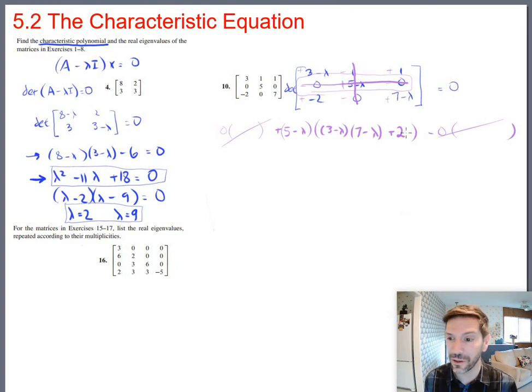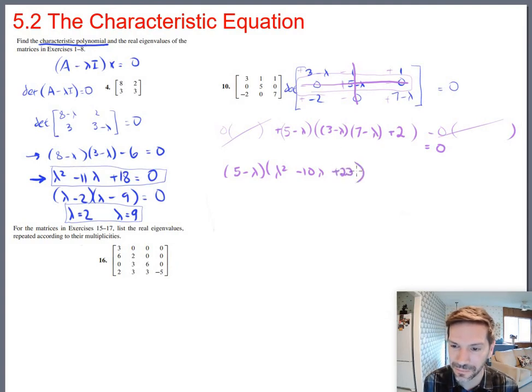That is the characteristic polynomial, although they will want it multiplied out. And because we are all hot shot math nerds in this class, this is fun stuff, right? We actually like multiplying out polynomials. I mean, how often do you get to come back and do this kind of thing? So let the good times roll, people. We've got 5 minus lambda. I'm going to go ahead and multiply out this stuff inside here first. That would be lambda squared minus 10 lambda plus 23 total in there.